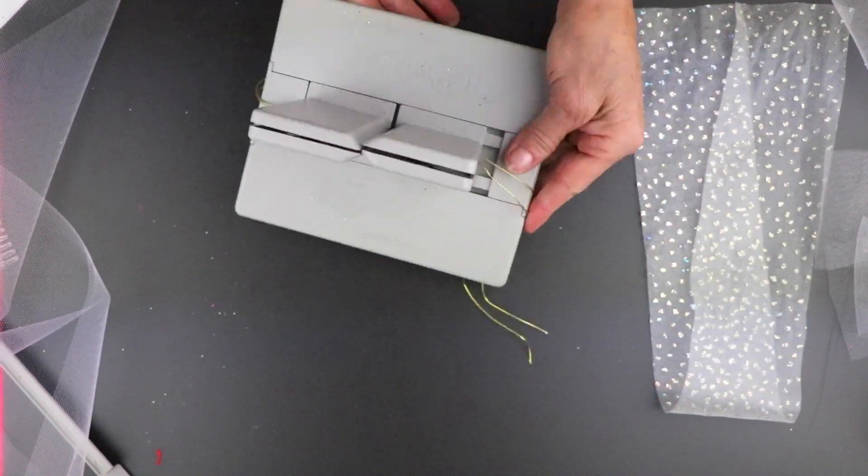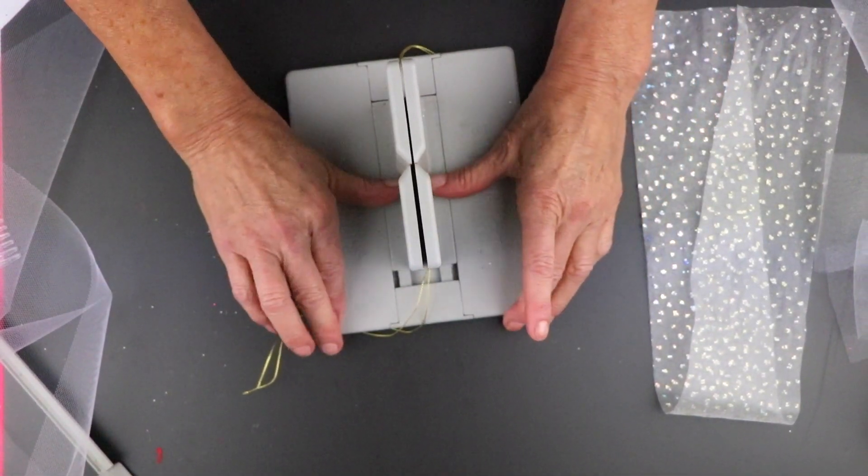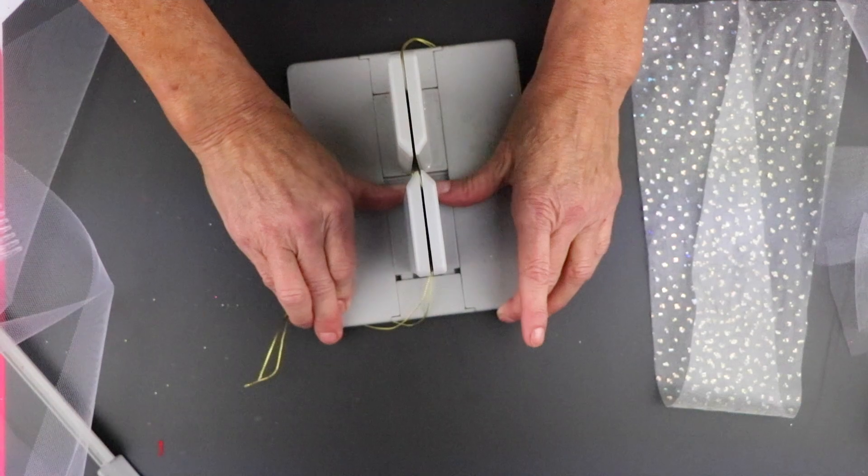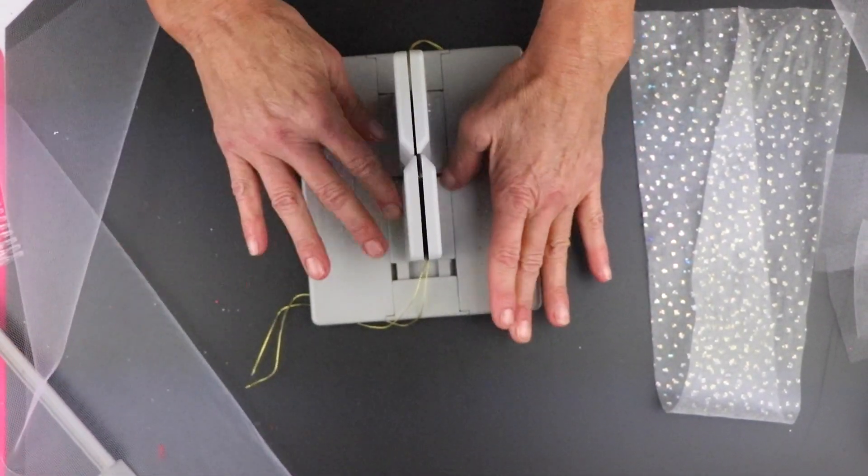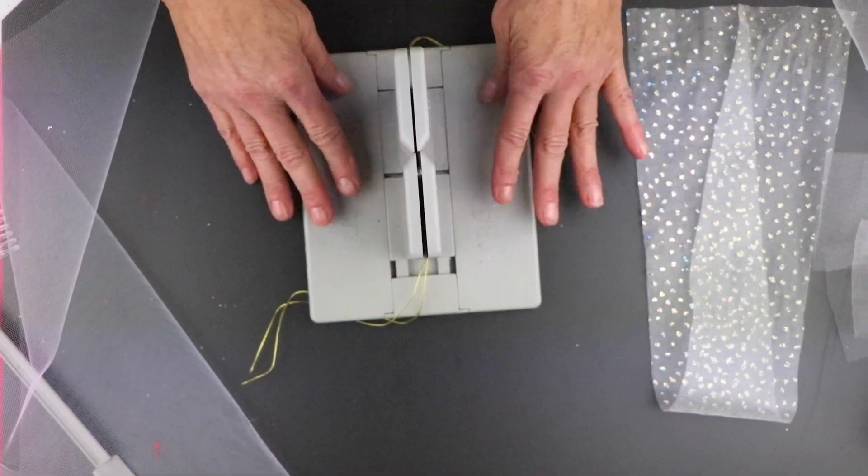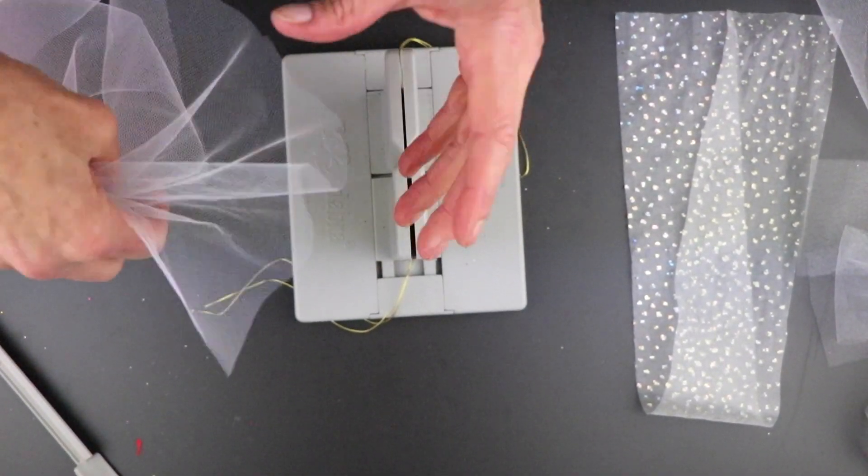Now, in case you're not familiar with the Bowdabra, I just want to show you there are springs underneath here. So that allows it to adapt to the very sheer tulle that I'm going to use versus a really thick ribbon. So I don't have to worry about holding it, because the Bowdabra acts as a pair of hands.